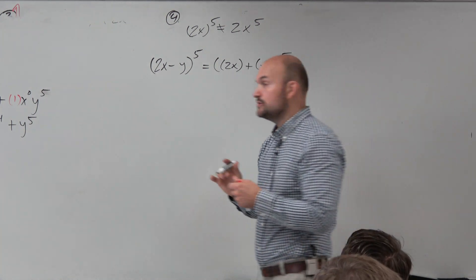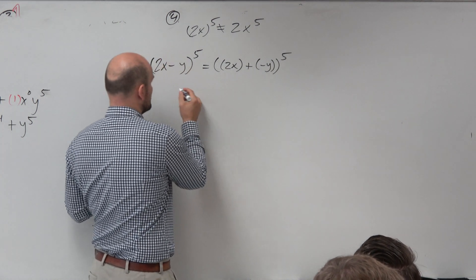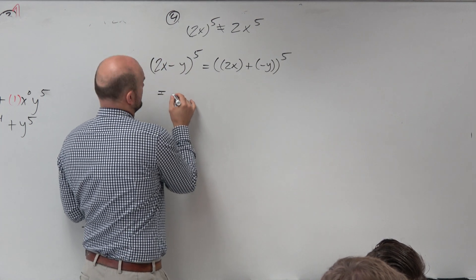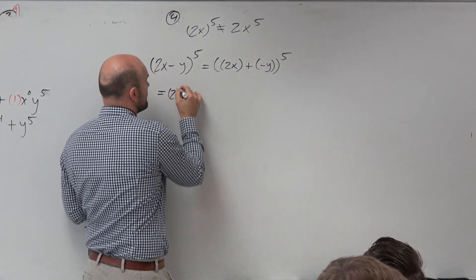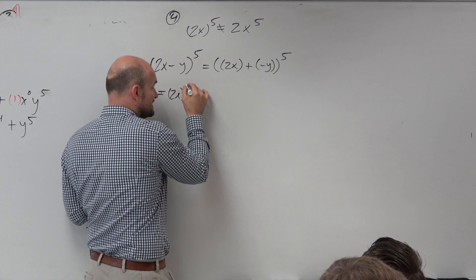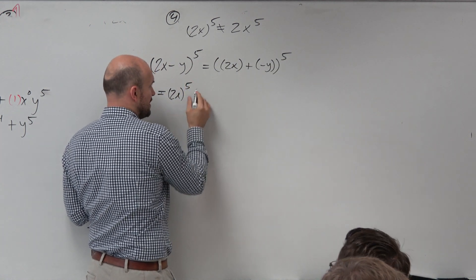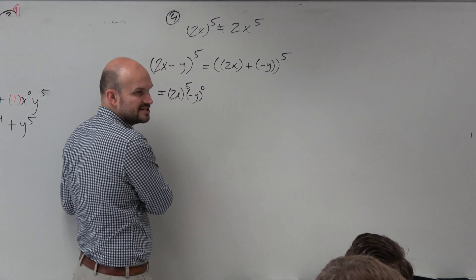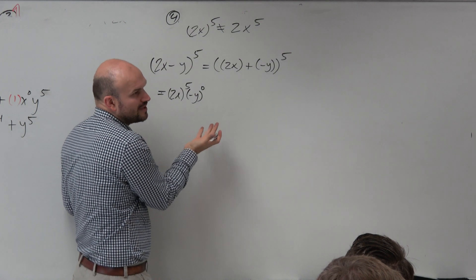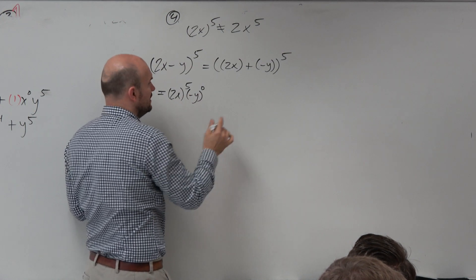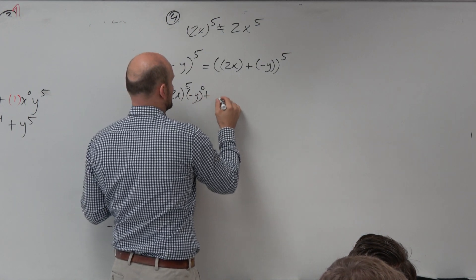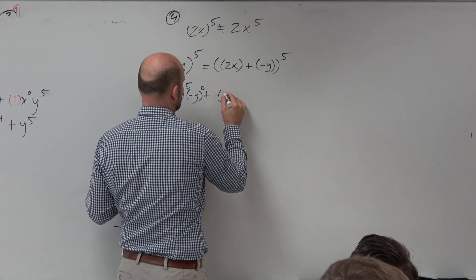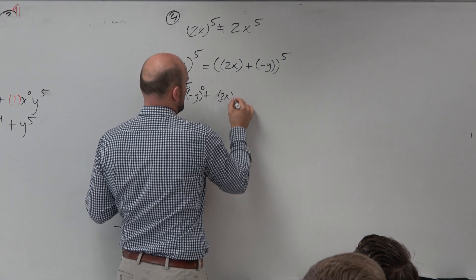Now let's go and use the binomial theorem to identify the powers. I'm going to have 2x in parentheses to the fifth power. You don't really need to write this first term to the zero power — I'm just writing it so you can see the pattern. In reality, if you don't want to write that number, by all means you can skip that portion.